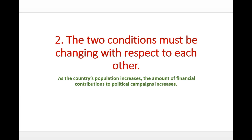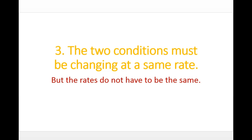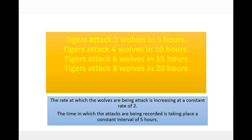Number three: the two conditions must be changing at the same rate. Now this could be a little technical because the rates do not have to be the same numerical value. For example: tigers attack two wolves in five hours, four wolves in ten hours, six wolves in fifteen hours, and eight wolves in twenty hours.